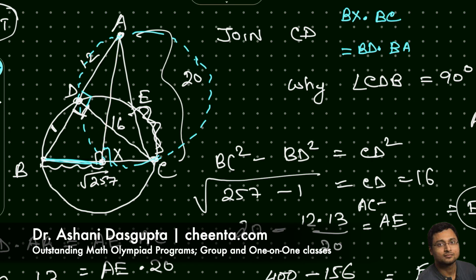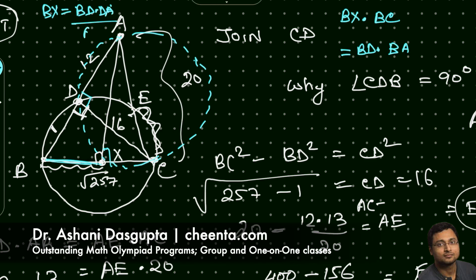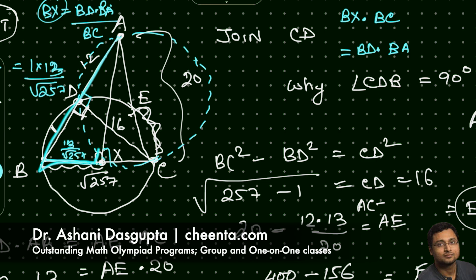Applying power of point B to the cyclic quadrilateral gives BX × BC = BD × BA. With BA = 13 and BC = √257, you get BX = 13/√257. Now apply the Pythagoras theorem in triangle AXB to find AX.